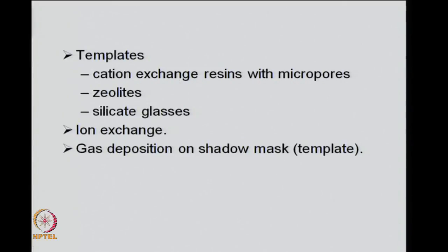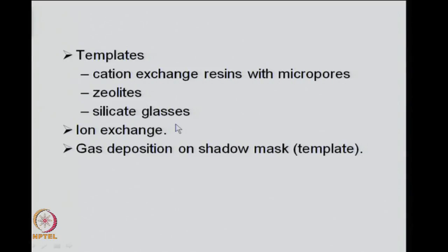What can be these templates in the molecular or nanostructural regime? You can use many templates. For example, you can use cation exchange resins which have micropores — that means the size of the pores are in the micropore range. You can use zeolites — all of you know zeolites are aluminosilicates with three-dimensional structures. They may have channels within them, and different zeolites have different pore sizes, so depending on which zeolite you use, you can make a small particle or a columnar structure. You can also use silicate glasses as templates.